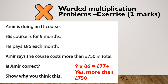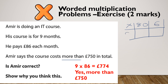Let's check where you got that from. I'm going to draw my grid: 86 is 80 and 6, and my 9 is 9. 9 times 8 is 72, add my zero — so 720. 9 times 6 is 54. 720 plus 54 gives me 774.